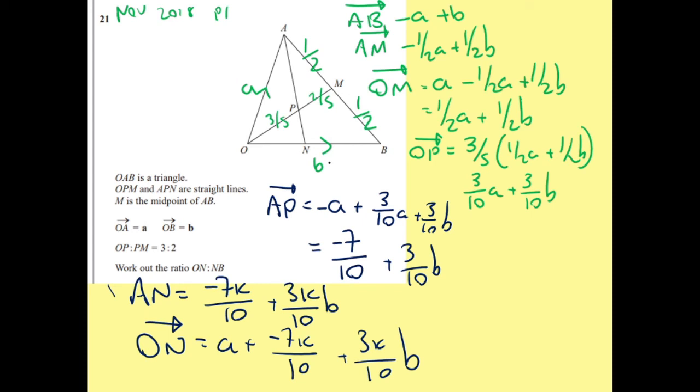Now if you look at ON, ON is on B. So the actual A's must equal to 0. And they must equal to 0 because it's on B. And it must only be represented as a fraction of B.